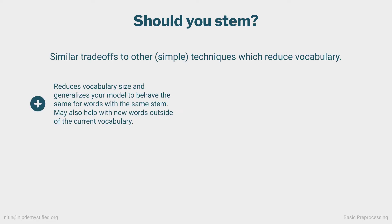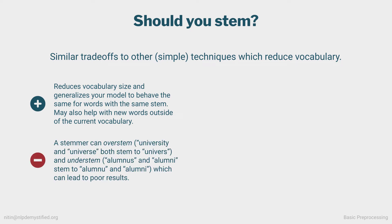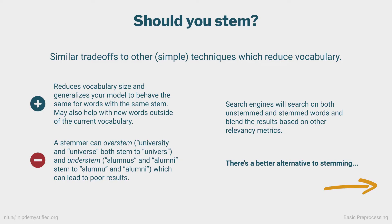Should you stem? Like case folding, stemming reduces the size of our vocabulary and generalizes our model for words with common stems. In information retrieval, if we index using stems, it can result in more documents retrieved — if someone types banking, it'll get stemmed down to bank and all related documents returned. But like case folding, it can affect precision. Banking and banks are two different concepts, and a stemmer can also over-stem and under-stem, leading to erroneous results. Some search engines perform searches using both stemmed and unstemmed words and blend results using other relevancy metrics. In general, stemming is rarely used these days outside of large-scale keyword search.